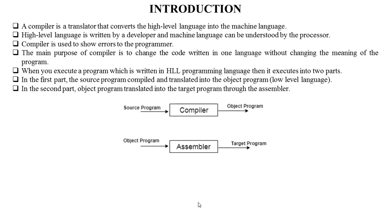Here is the diagram for compiler and assembler. First, the source program is given to the compiler and the compiler produces the object program. The object program then goes to the assembler and the assembler gives the target program.